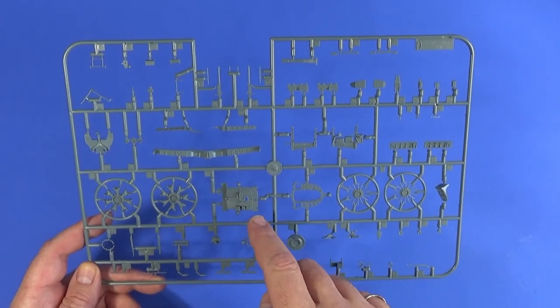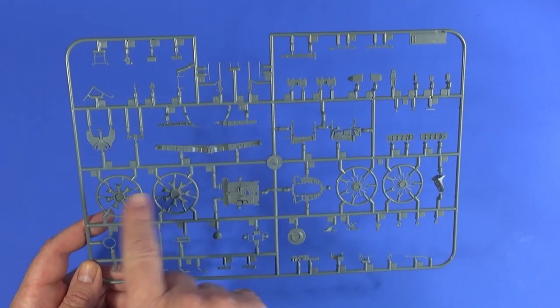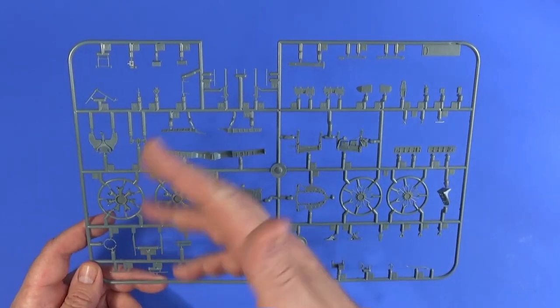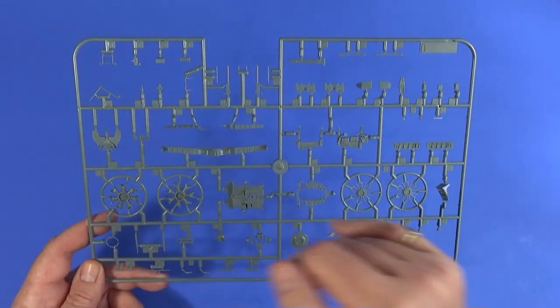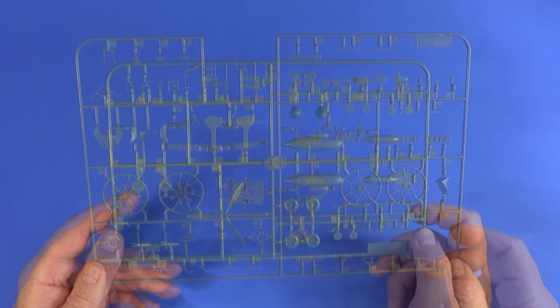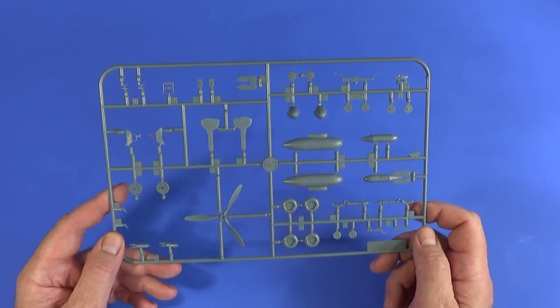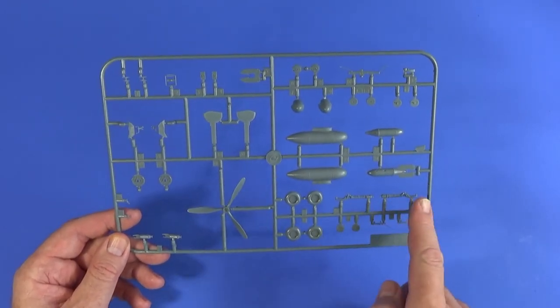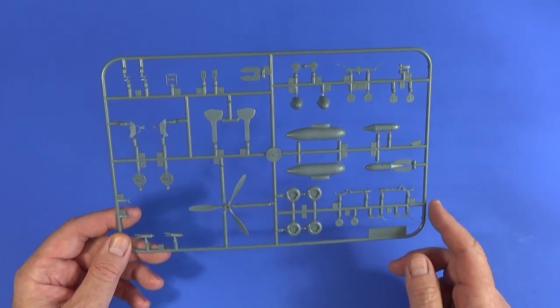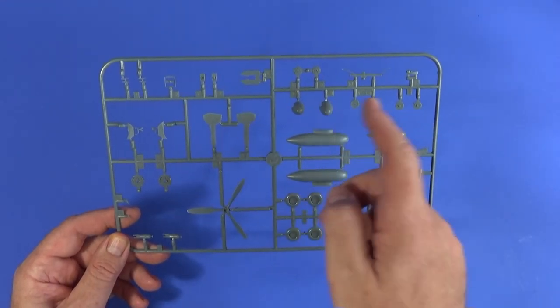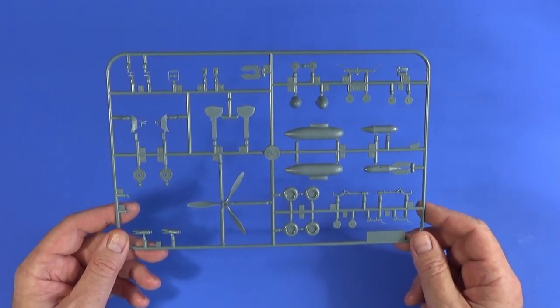Frame D is the bulk of the interior, really, cockpit parts and so on. Engine components here, the undercarriage bays, just general bits and pieces as well, radio sets and whatever. Throttle quadrants, bomb releases, all sorts of stuff there. And then frame E, a couple of very small bombs, wheels and tyres, undercarriage, bigger bombs, undercarriage doors, that kind of thing, different prop bosses, which is interesting.